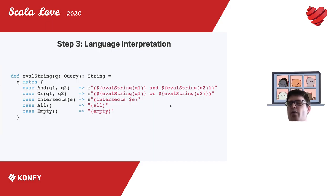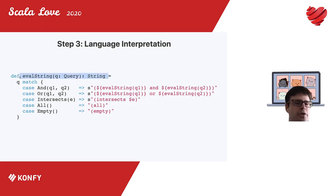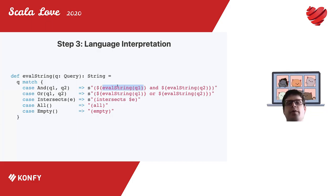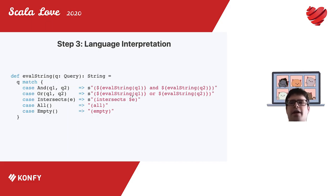Now, how to interpret the language we've designed. The easiest interpreter is just traversing the structure recursively and converting everything into a stream. The function starts at a node, pattern matches on it — for example an And expression — then applies the evaluation function recursively to the next step of an expression, going deeper until it finds a leaf node like Intersects, All, or Empty.